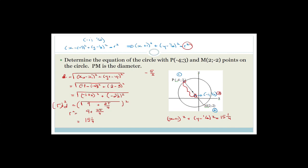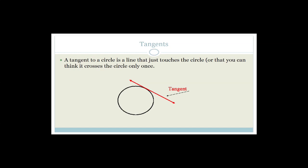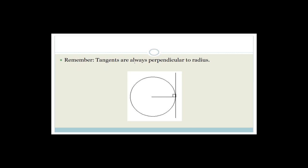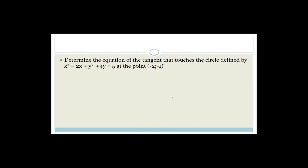Now tangents to circles. A tangent to a circle is a line that touches the circle only once. Tangents are always perpendicular to the radius — always. It doesn't matter where the radius is; if there's a tangent, they are perpendicular.